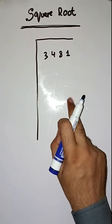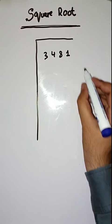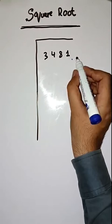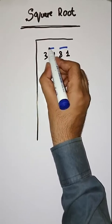We have to find square root of 3481. So students, first step is we have to make pairs from right to left like this. We have to make pairs, first pair, second pair.